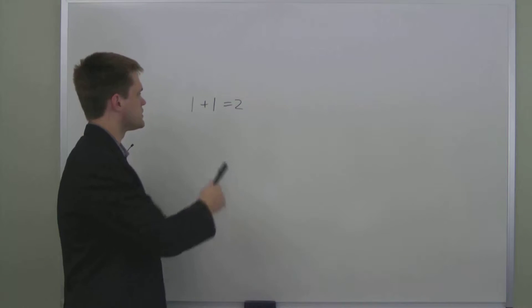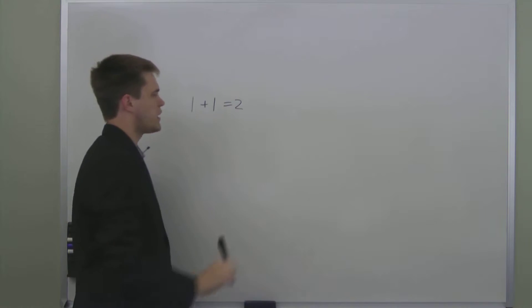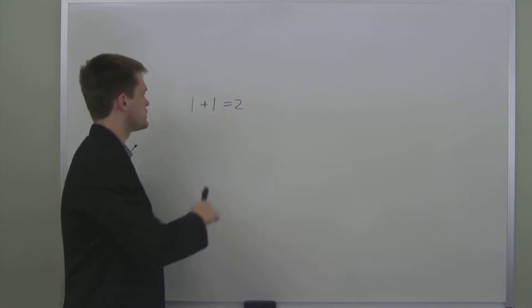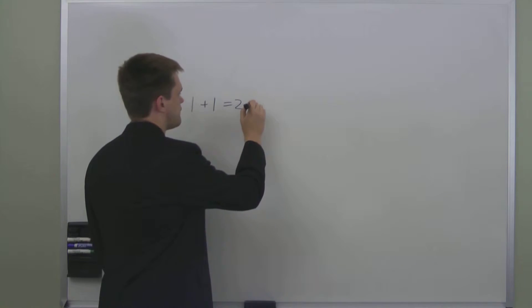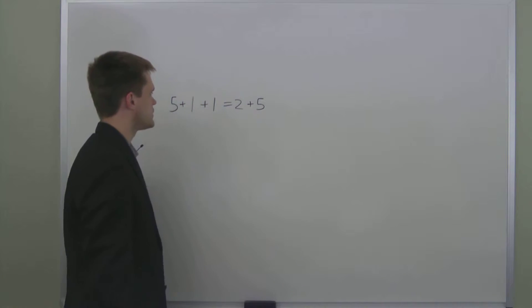Now the beauty of equations is that you can perform any operations the same way on both sides of the equation and the equation remains true. For instance, we can add 5 to both sides of this equation and the equation is still true.